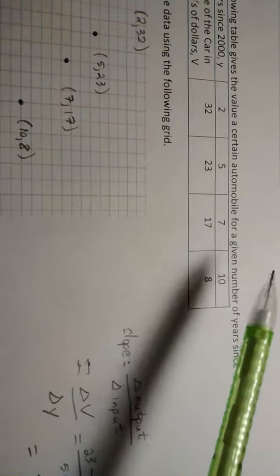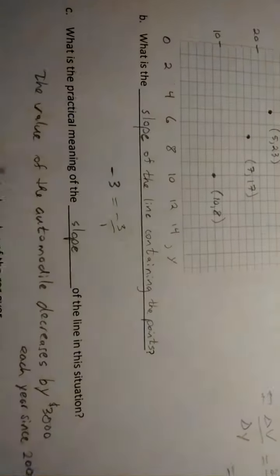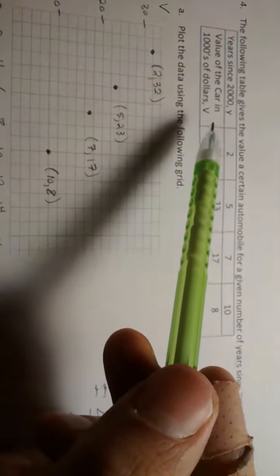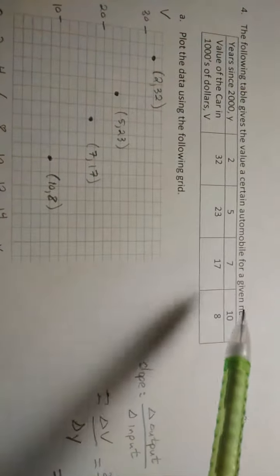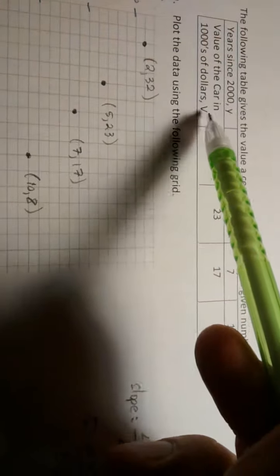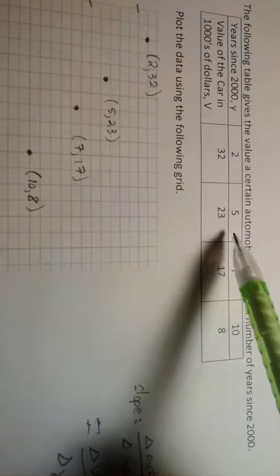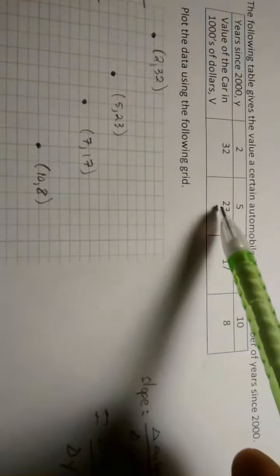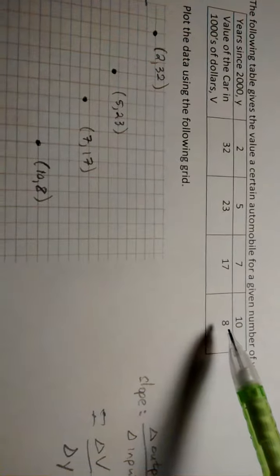We'll look at, let's take the average rate of change of the value of the car over a couple of intervals. So what's the average rate of change here of the car, the value of the car from year 5 to year 10 after the year 2000? Well, we would use that pair and that pair, and the average rate of change is in fact defined this way.